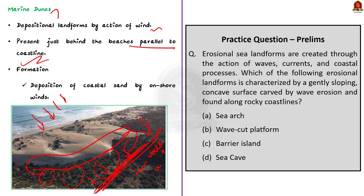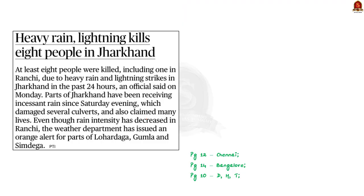I hope this discussion was helpful. With this, let us conclude this discussion and take up the next news article. According to this news article, in the past 24 hours, 8 people were killed in Jharkhand due to heavy rains and lightning strikes. So in our discussion today, let us see about the lightning disaster and the reason for the sudden increase in lightning disasters.